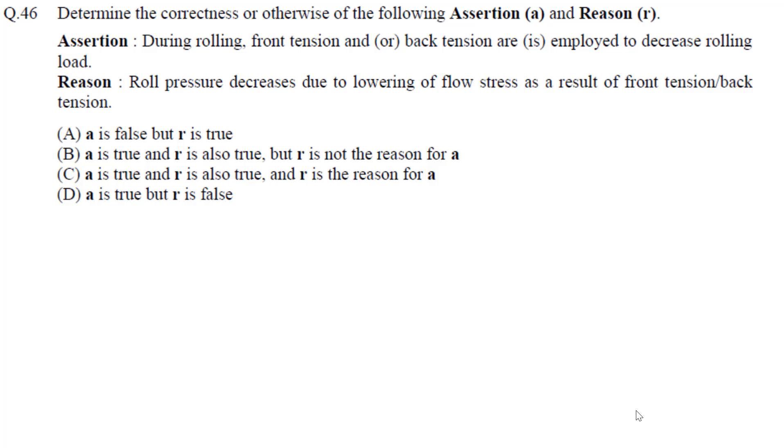Next question: determine the correctness of the assertion and reason. During rolling, front tension and back tension are employed to decrease the rolling load. This is correct. The reason states roll pressure decreases due to lowering of flow stress as a result of front tension or back tension. This is also correct, and the reason explains the assertion. Both are true and R is the reason for A.